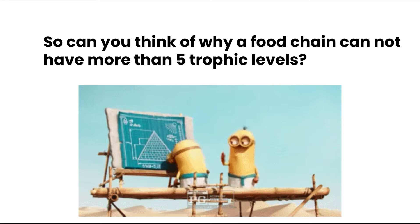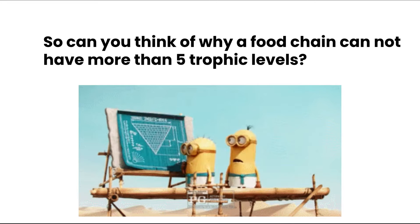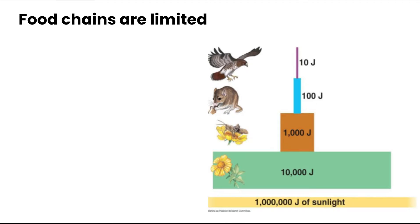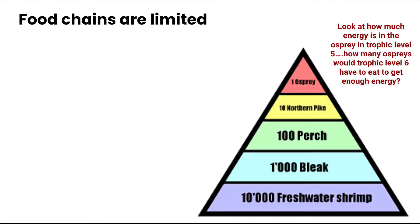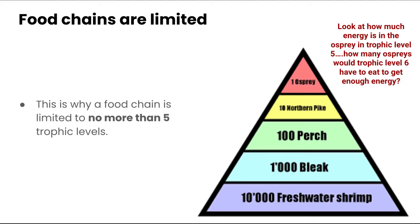Food chains cannot have more than about five trophic levels. The more trophic levels between producers and top carnivores, the less energy that's left from the original amount. By the time we get to the top of this diagram, there are only 10 joules of energy left. By the fifth trophic level, the amount of energy is so little that there's almost nothing to pass on, and organisms wouldn't have enough energy to carry out the processes they need.